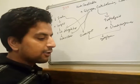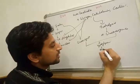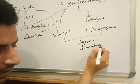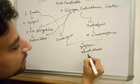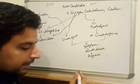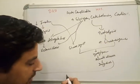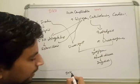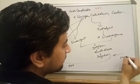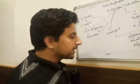Increased gluconeogenesis and decreased glucose utilization cause hyperglycemia. Hyperglycemia then leads to osmotic diuresis, which causes severe dehydration. Dehydration further worsens the condition leading to DKA, and also causes hyperosmolarity — which is a key feature of HHS as well.